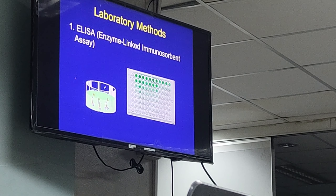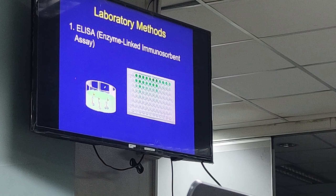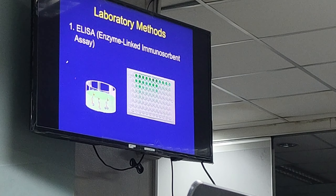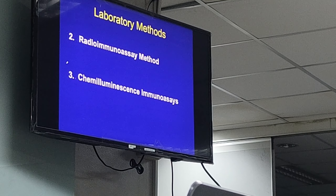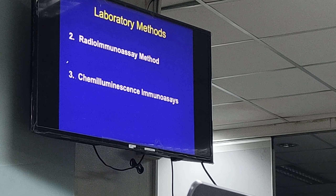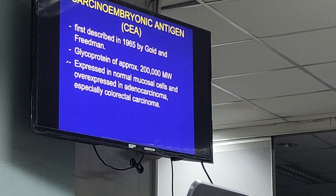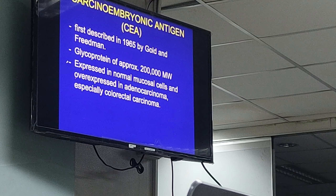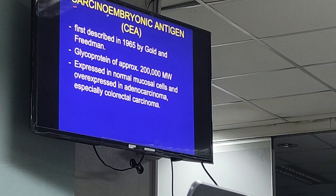These are the different methodologies employed in the laboratory to detect tumor markers: ELISA or enzyme-linked immunosorbent assay, radioimmunoassay, and chemiluminescence immunoassay. The first tumor marker we are going to discuss is called Carcinoembryonic Antigen, or CEA.